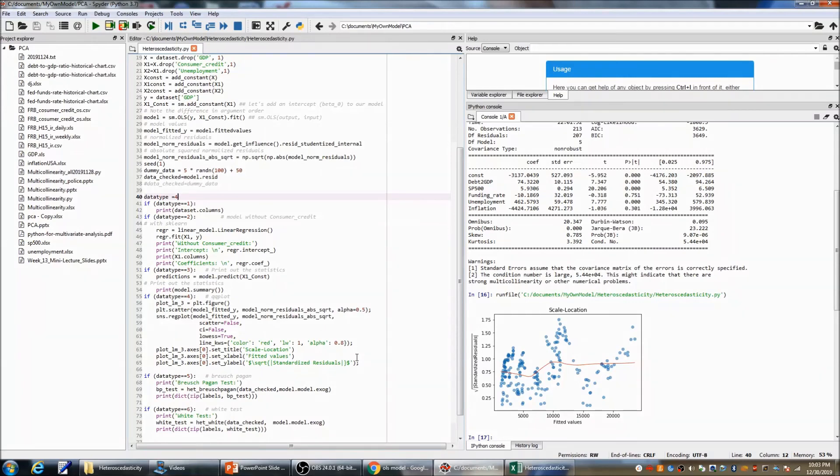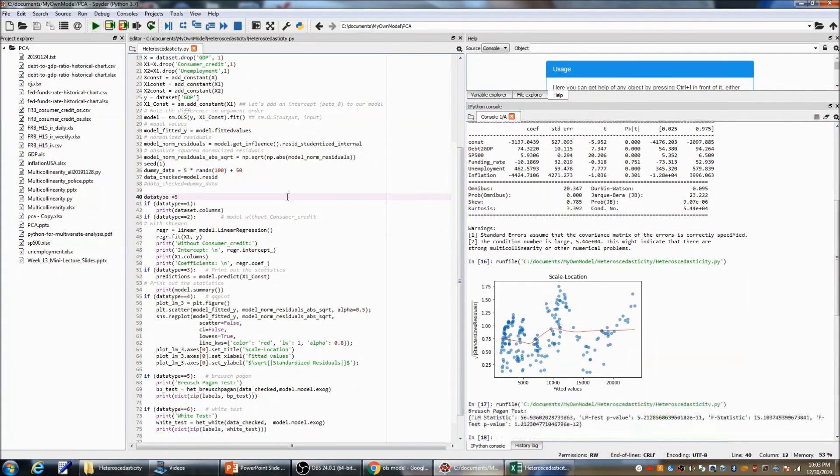Now, let's use Breusch-Pagan test to detect if we have heteroscedasticity. With Breusch-Pagan test, we can see the LM test p-value is very small, and also the f-test p-value is very small. So, it does show we have heteroscedasticity for this model.